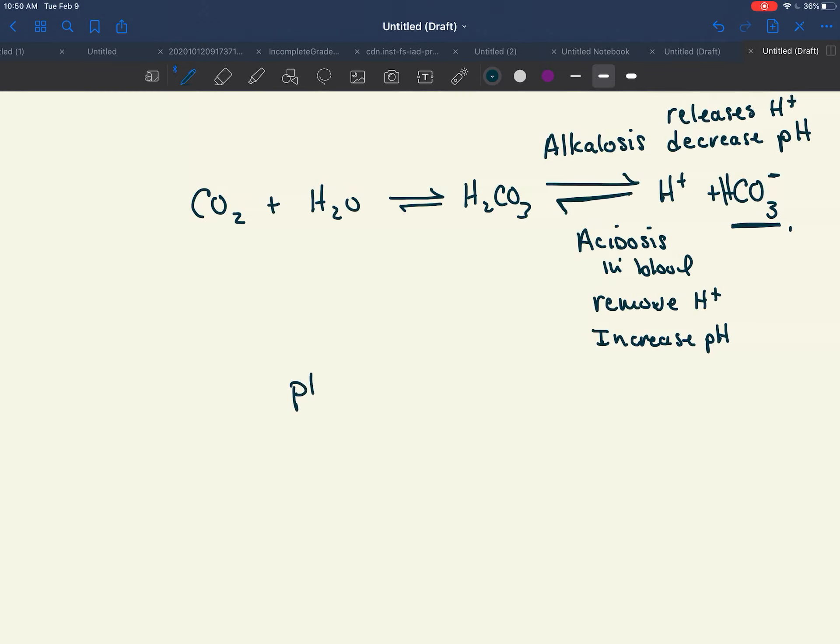So our blood pH, remember, needs to be around 7.45, but it could be, say, for example, 7.4 to 7.5, right, or as a range.